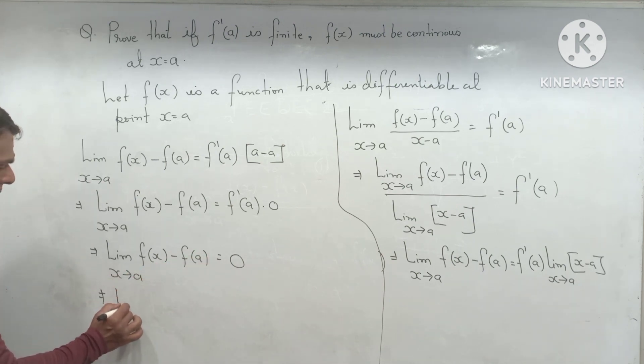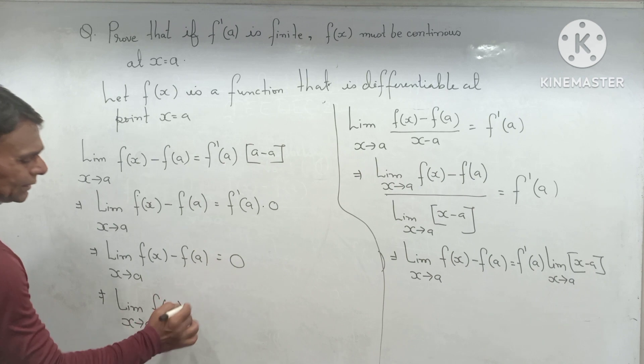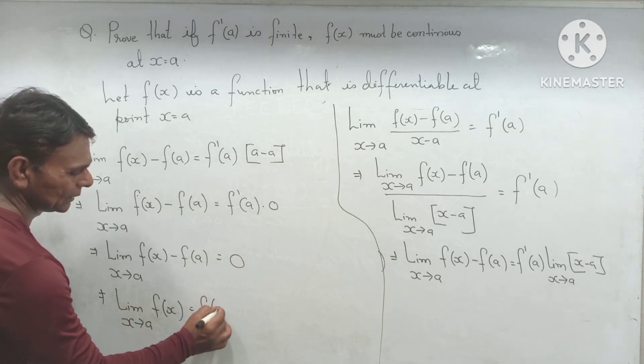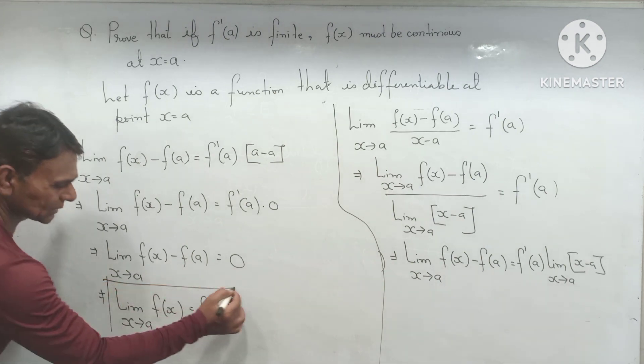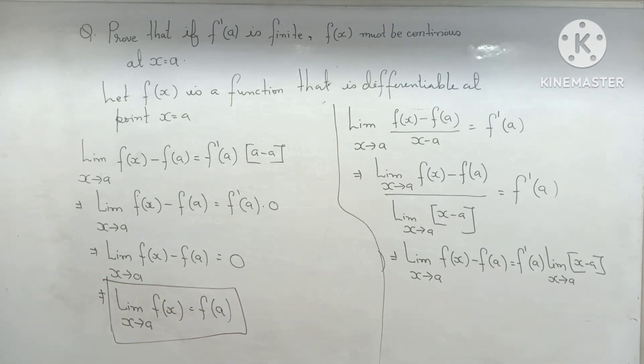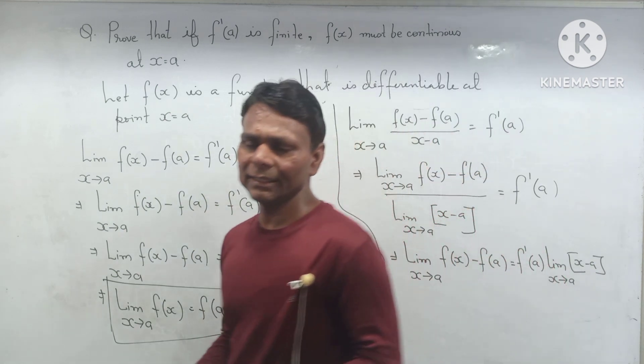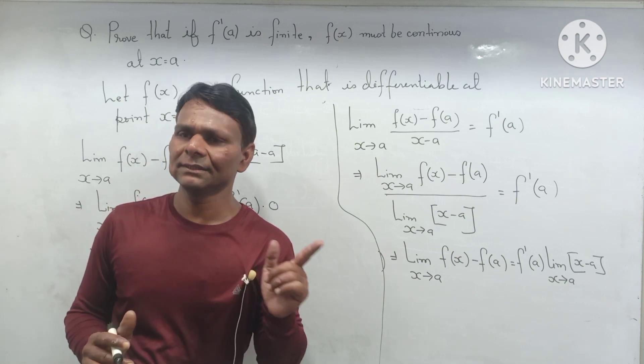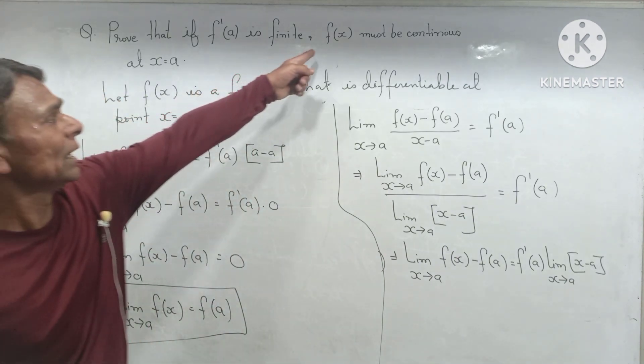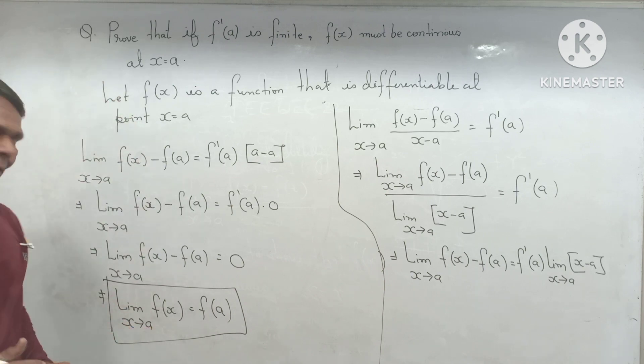So limit as x tend to a, f(x) minus f(a) equal to 0. This is the thing we have to prove. Limit as x tend to a, f(x) equal to f(a). This means f(x) is continuous at the point x equal to a. Limit value and value of function at this point are equal, that means function is continuous.